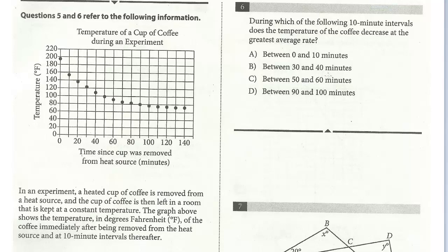In this lesson, we'll continue our review of Math Test 9, Section 4, Calculator Permitted. We're still early on — we're on questions 5 and 6. This is a paired question, so both questions refer to the following information.